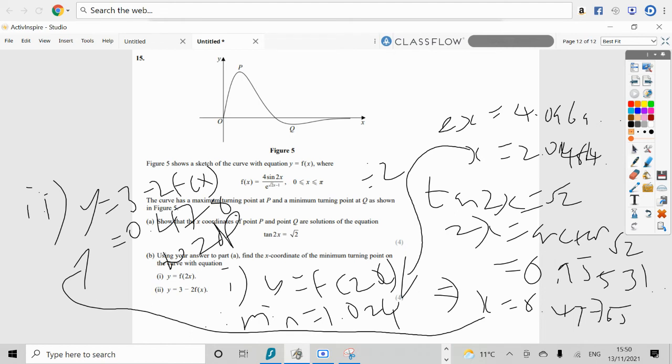As we know the x coordinates of the minimum are relating to tan 2x of being able to root 2. It's a weird question. I wouldn't expect this to come up any time soon, but it's a good little question to have a practice of if you're wondering.